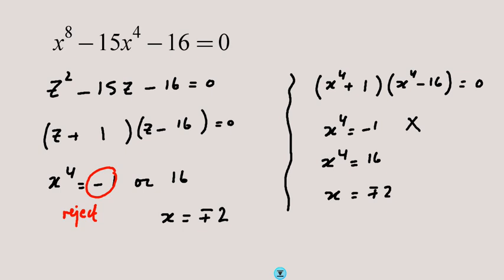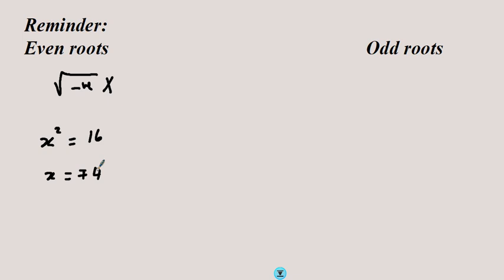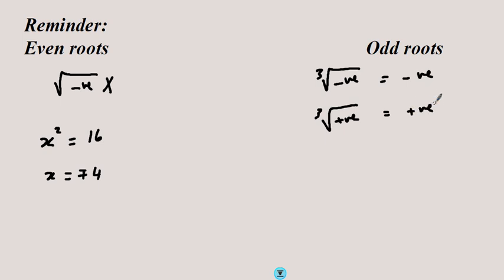It is a very simple principle, but remember two important rules. First, for even roots you cannot have a negative number under the root. Second, if you have x squared equals 16, don't forget there are two possibilities: x equals plus or minus 4. However, with odd roots you can take the cube root of a negative — that gives another negative — and the cube root of a positive gives a positive. In both cases there is only one answer; for example, the cube root of 8 is 2, and the cube root of negative 27 is negative 3.